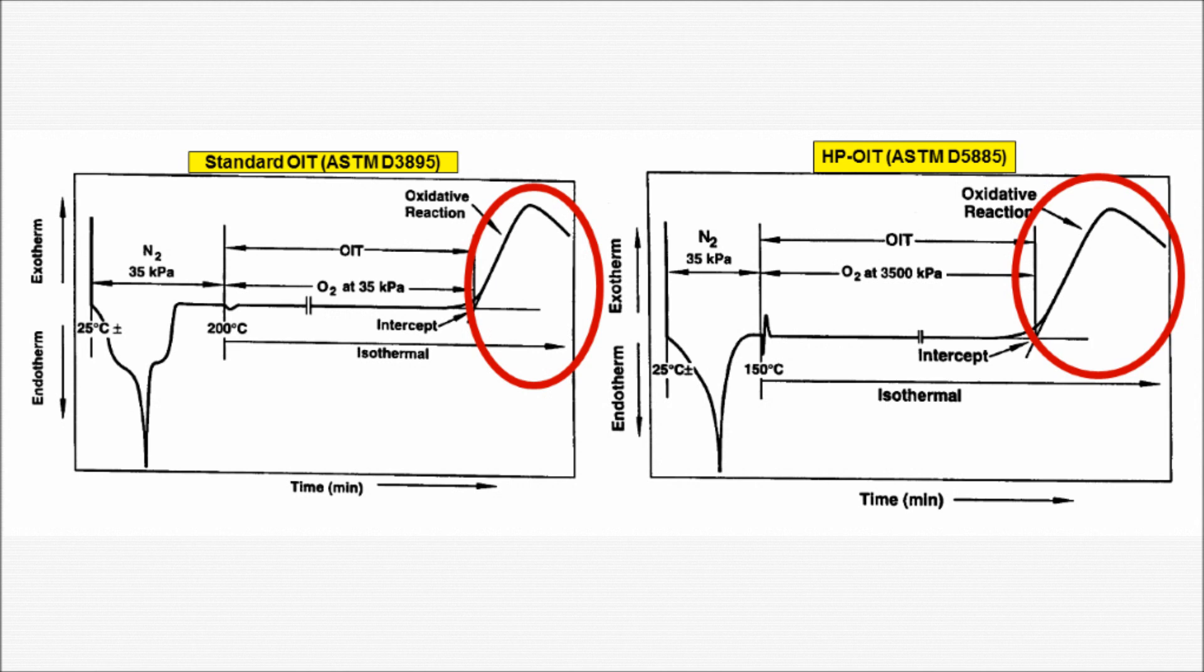Highlighted now is the exotherm for both graphs. As you can see, the heat flow ramps up to reach a peak, and then begins to fall. Once the peak has clearly been overcome, the test may be stopped.